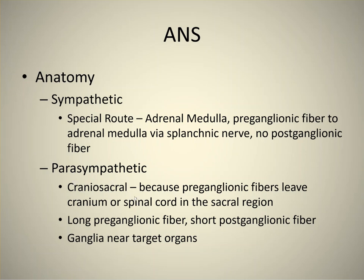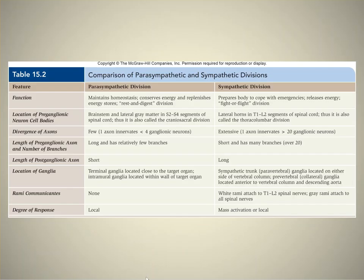Parasympathetic is craniosacral — long preganglionic, short postganglionic. Slide 13 is a summary table. The important point is that the sympathetic division uses the ramus communicans, where fibers enter and leave the sympathetic chain ganglion, while the parasympathetic division does not use those.